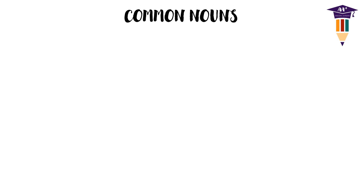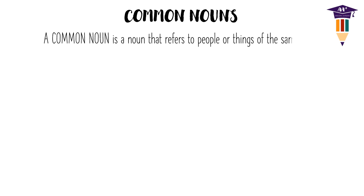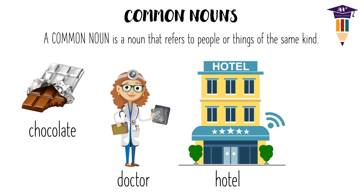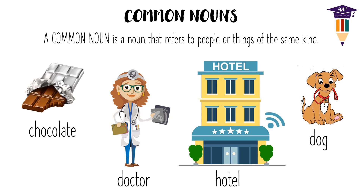First, common nouns. A common noun is a noun that refers to people or things of the same kind. Examples: chocolate, doctor, hotel, dog. All these nouns are common in nature — that is, they cannot be distinguished among their own kind or type unless they have a proper name.